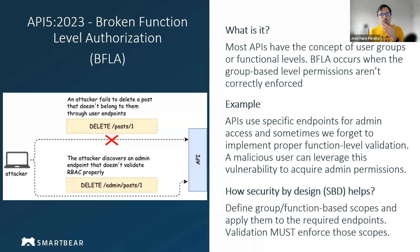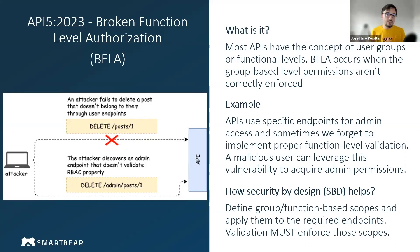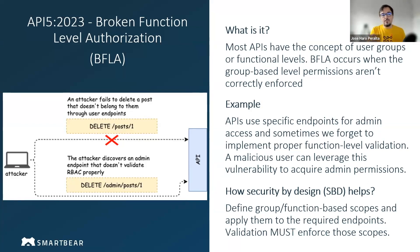A common way this happens is that we have specific endpoints for different user groups. For admins, we often have a specific admin endpoint — it can be a subdomain or a path in the URL. Because it's a different endpoint, we sometimes assume it's only accessible within a VPN or restricted environment, so we assume requests coming there are legitimate and don't implement full role-based access controls. This is a mistake, because those endpoints can get exposed. A user may figure out they don't have access to certain operations, try through an admin endpoint, and manage to gain access to those resources.